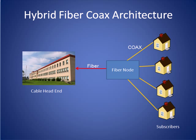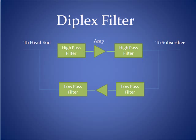Inside the fiber node, there is equipment that allows information to be transmitted in both directions on the coaxes that go to the subscriber. Specifically, the presence of a diplex filter allows such bidirectional transmission.